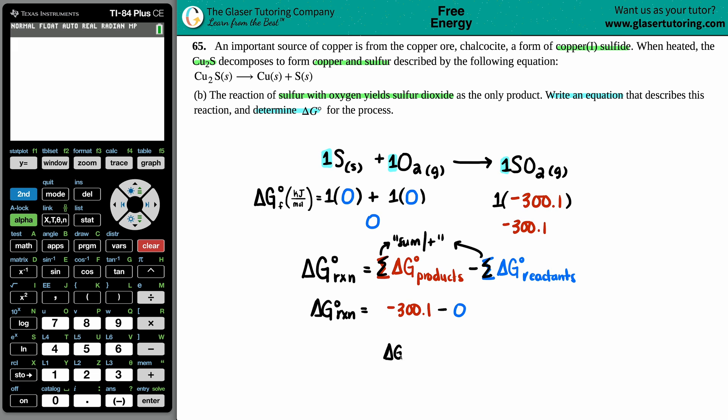Delta G for the whole entire reaction is negative 300.1. I mean if you don't believe me, we could just plug it in to the calculator. Delta G for the whole entire reaction is negative 300.1, and now the units are just going to be kilojoules because the ones that we multiplied are the moles, so moles will cancel out. So we're just left with kilojoules.